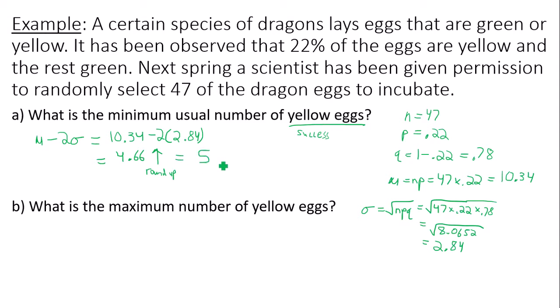5 is the minimum usual number. Now as a warning here, it is possible sometimes for you to get a negative number for your minimum usual value. In the instance you get a negative number, such as in this case, you can't have a negative number of dragon eggs. So you automatically just, by default, make the minimum usual number 0. So once again, if you ever get a negative minimum usual number, you will typically use 0 as the minimum usual number, because you can't have negative with something.